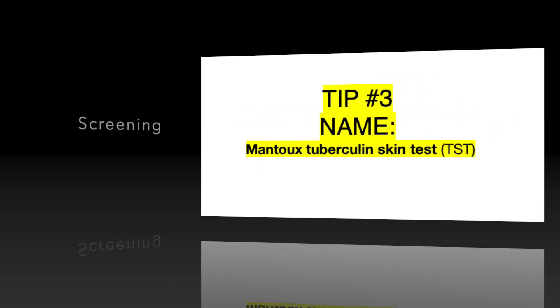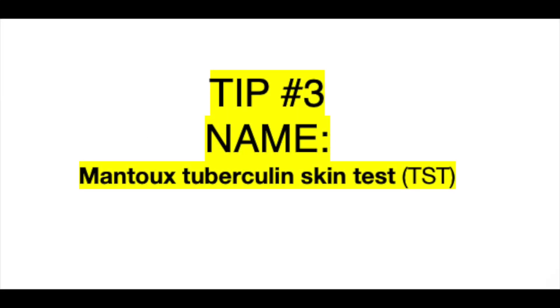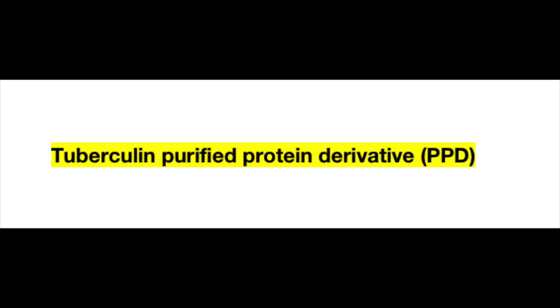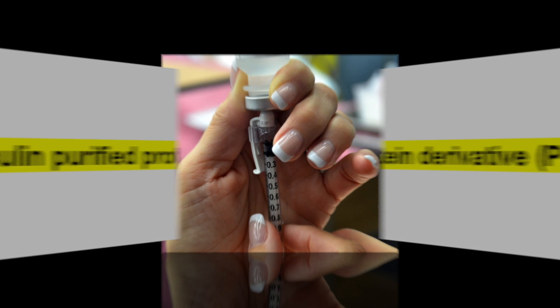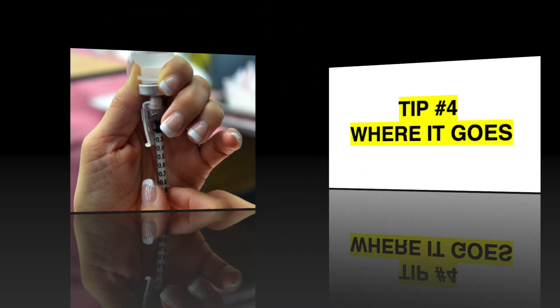Tip number three: the name. Sometimes you'll hear different things being called for this test. The most common is probably TB skin test, but it's actually called the Mantoux tuberculin skin test, or TST. Some people also say the PPD test, which is basically the solution that is used for the TB skin test.